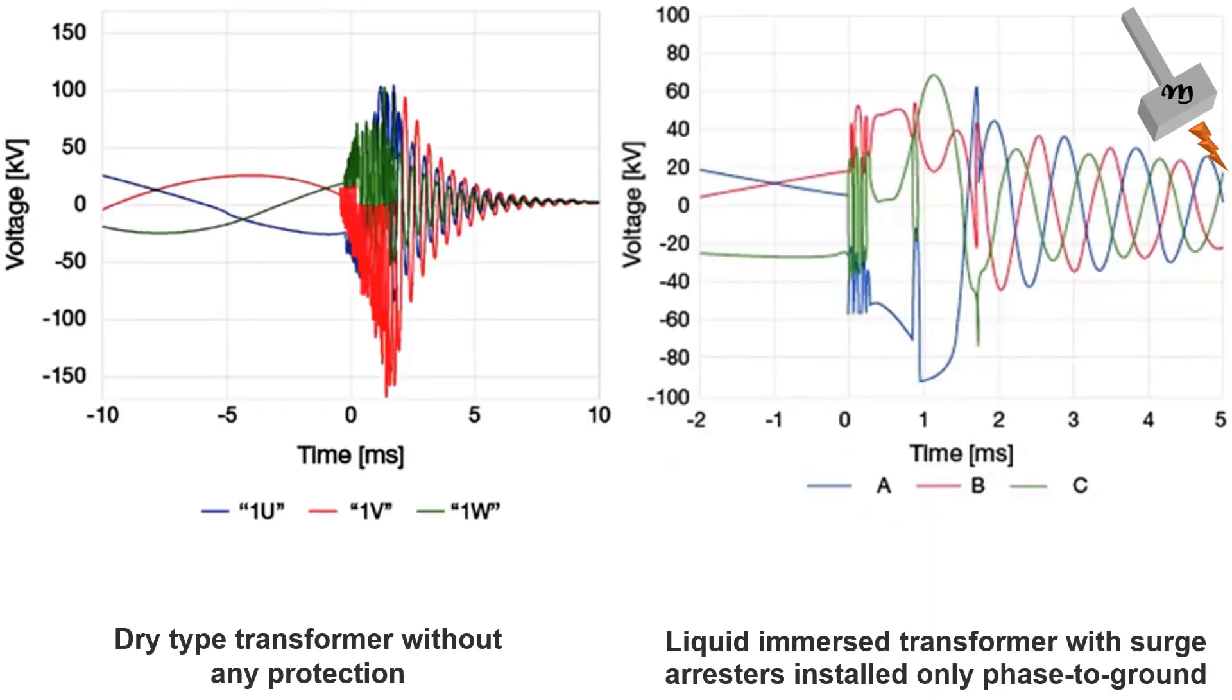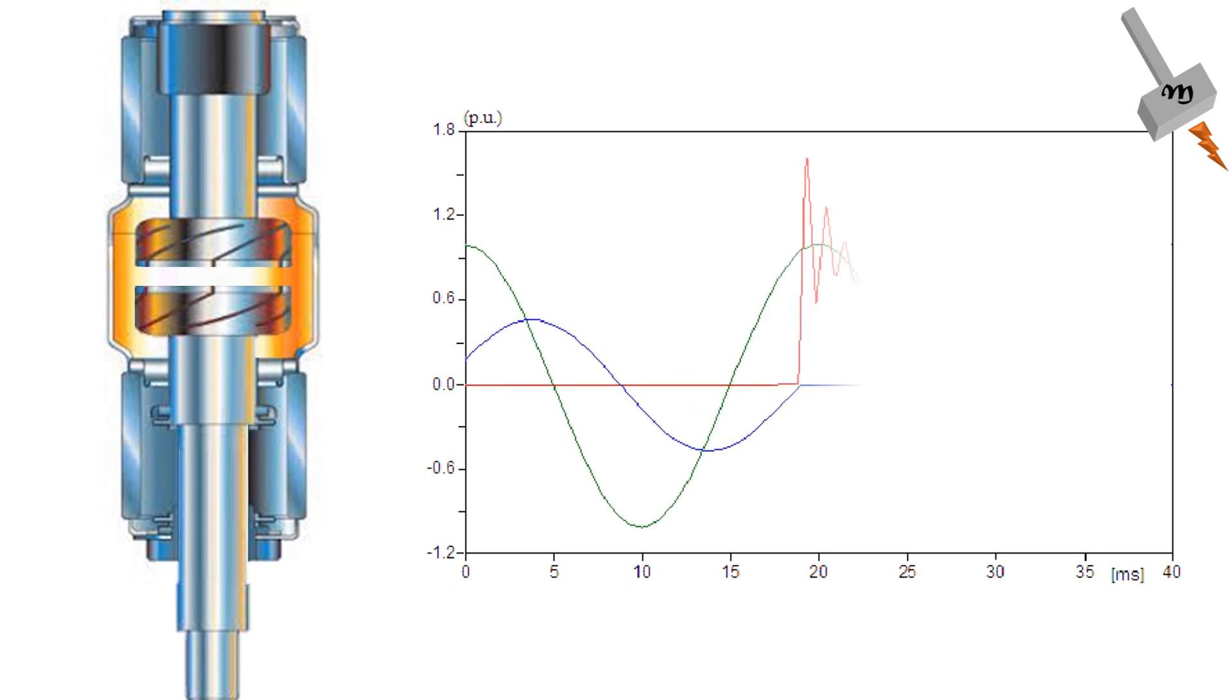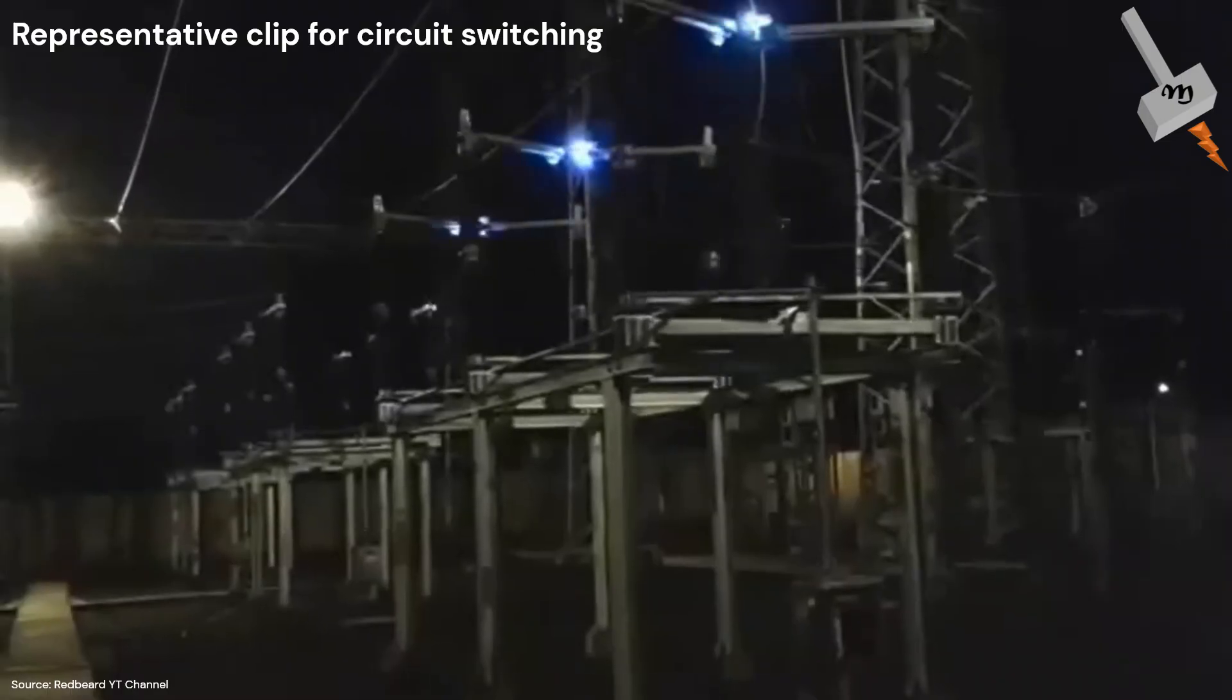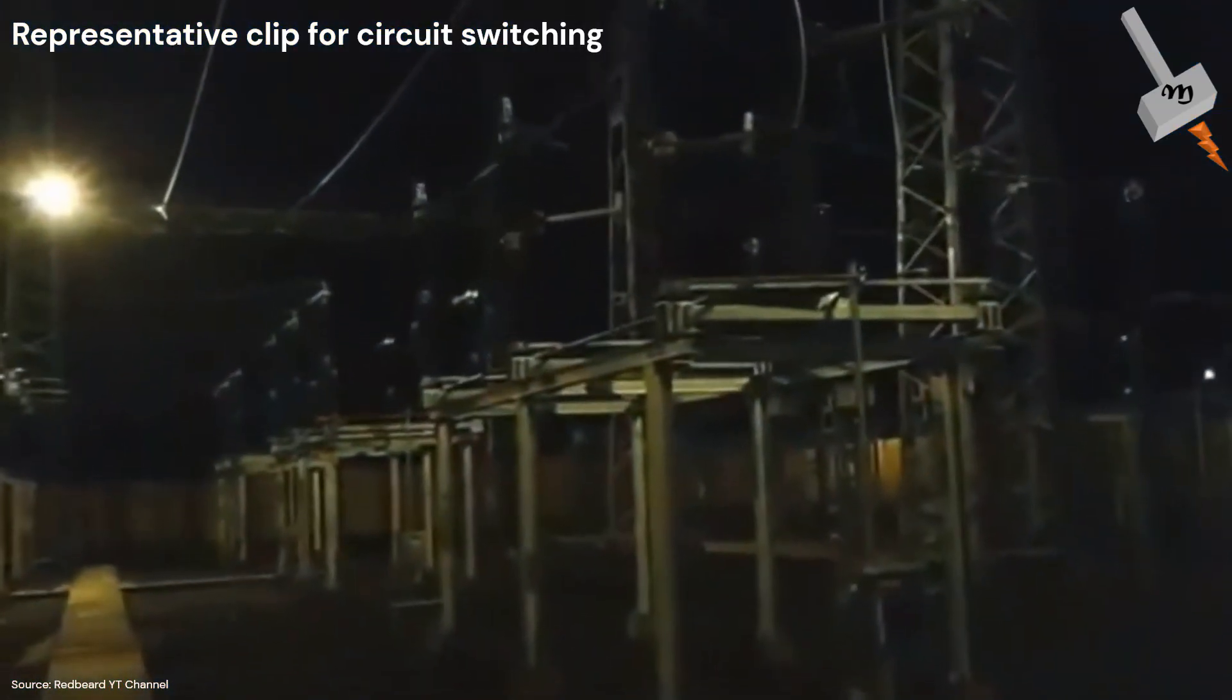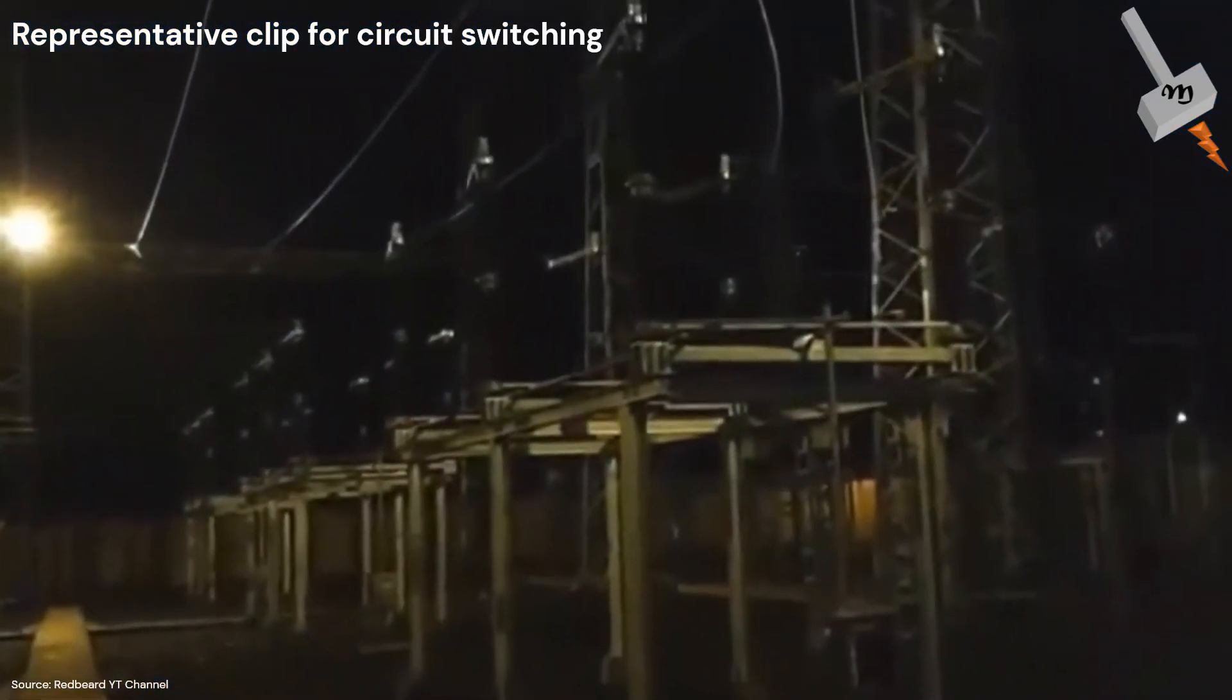This graph shown here is for transient overvoltage generated in transformer with and without surge arrester protection. Transient voltage arises as a consequence of the intricate dynamics at play when VCB are engaged or disengaged. The formation of transient voltage can be attributed to the following process.